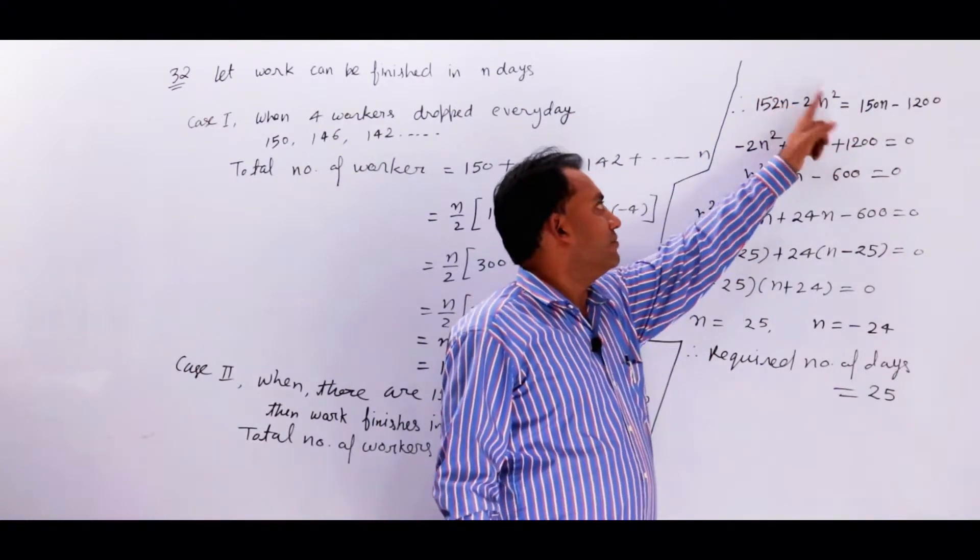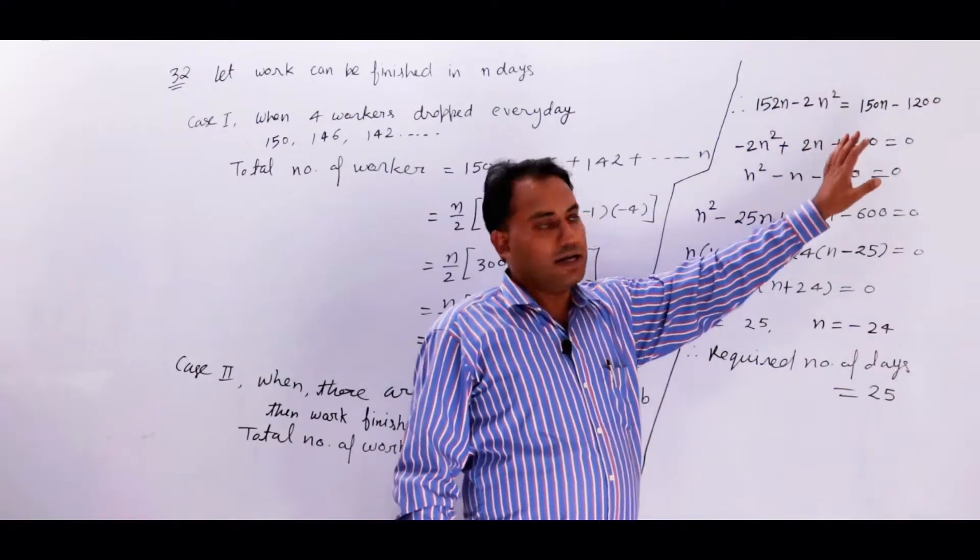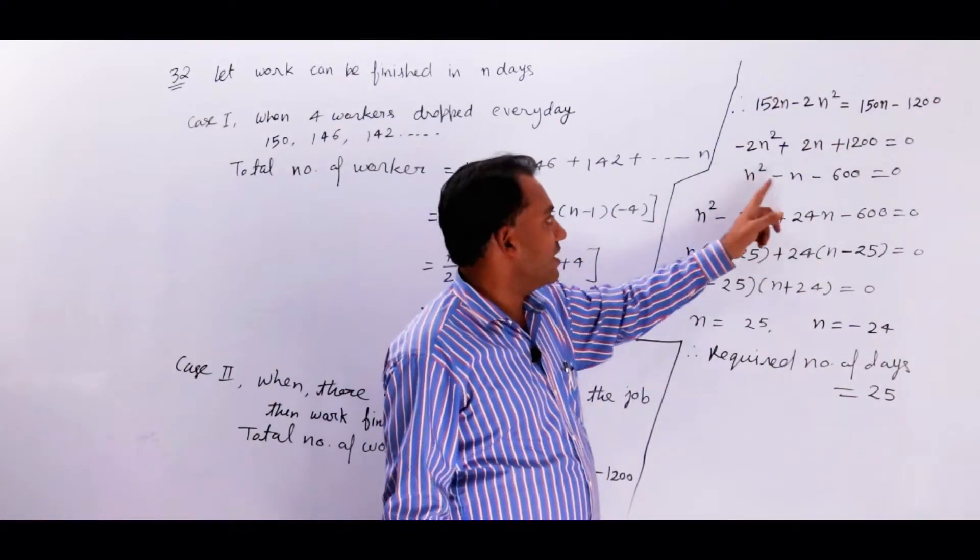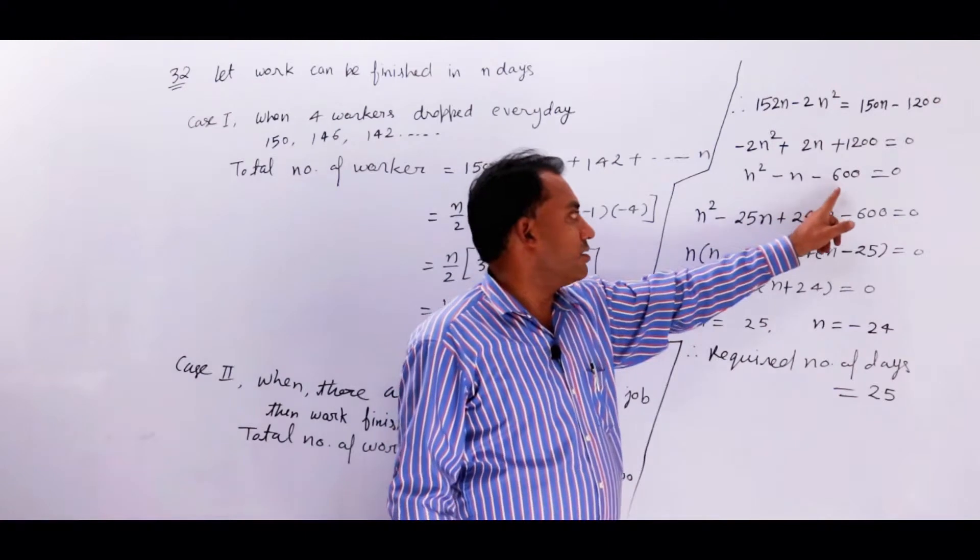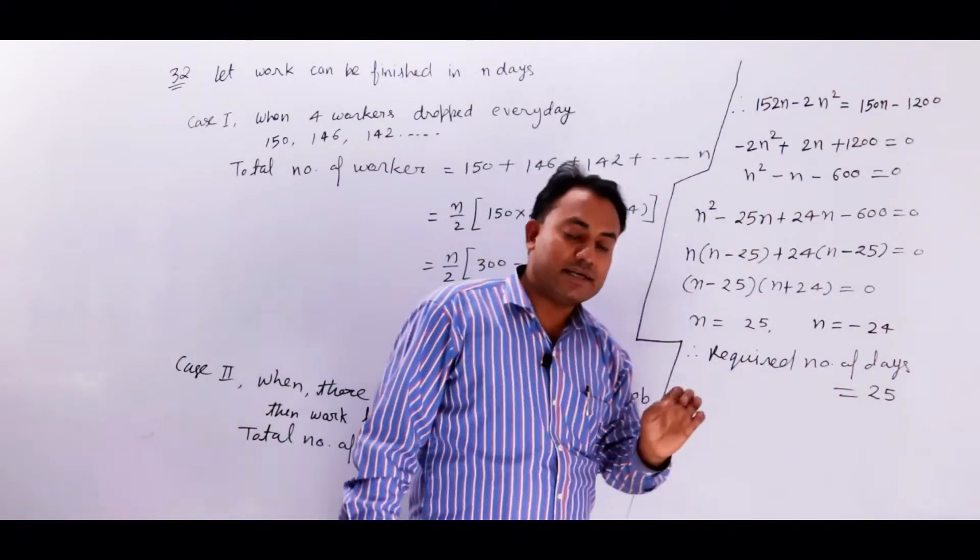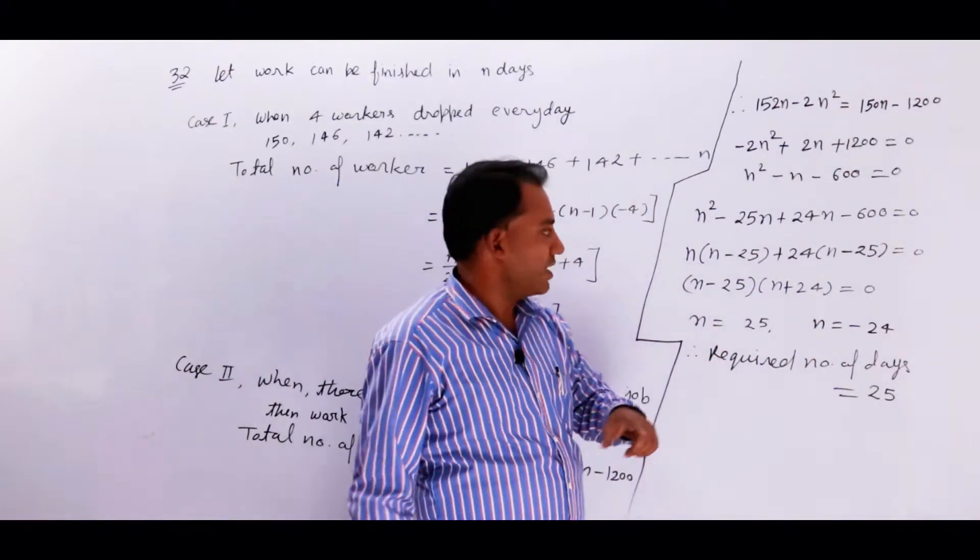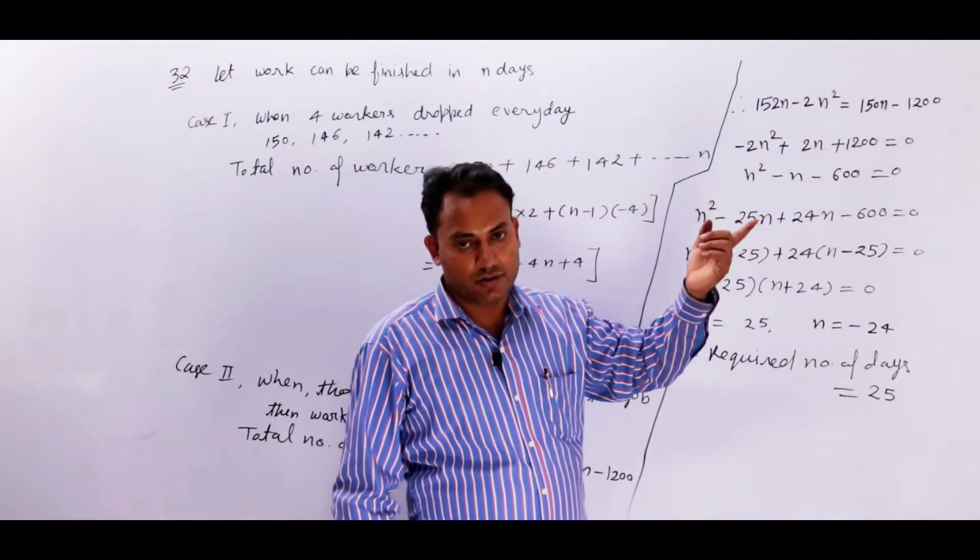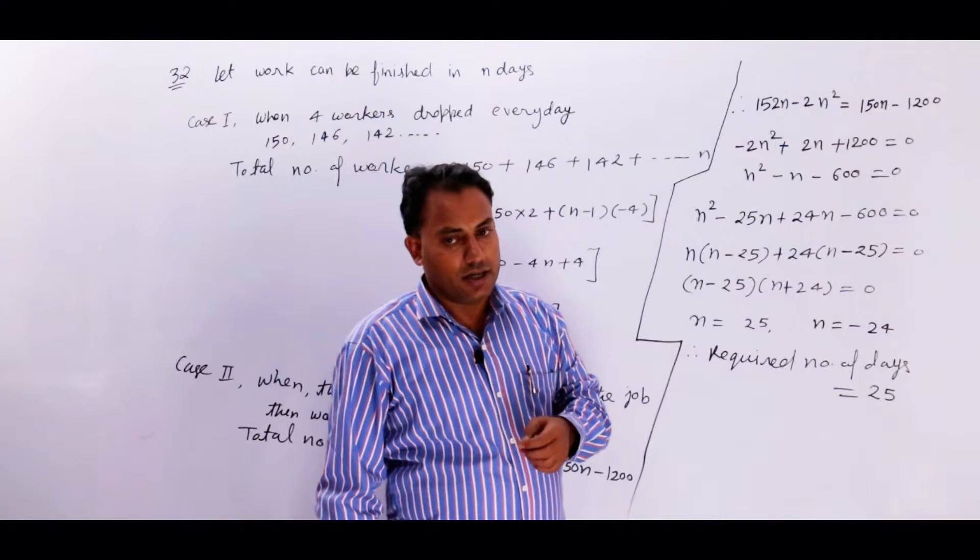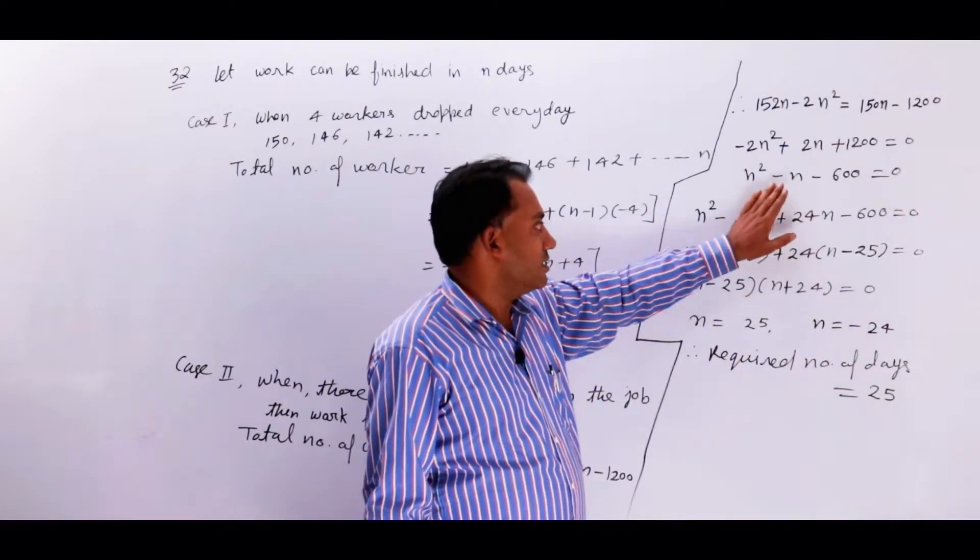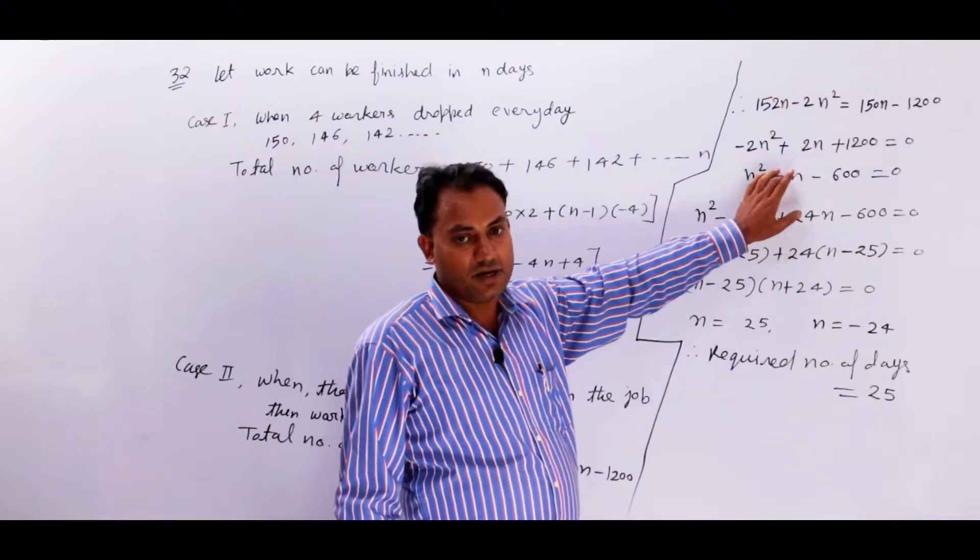Like term hai to 152 minus 152n and this 1200 minus. 2n square and minus 600. Two factors jo difference one ho, so 25 or 24.